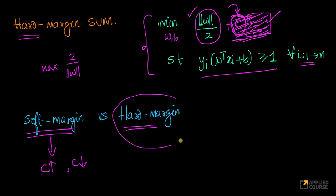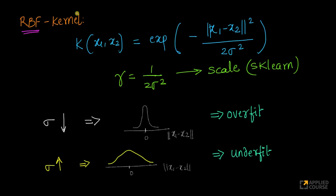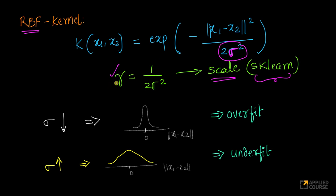We decide to use a hard margin SVM with an RBF kernel, since there are no hyperparameters in the primal formulation itself. The RBF kernel for two points x1 and x2 is: K(x1, x2) = exp(−‖x1 − x2‖² / 2σ²). This is the squared Euclidean distance divided by 2σ². Some use the notation gamma = 1/(2σ²), so the kernel becomes exp(−γ‖x1 − x2‖²). Scikit-learn uses gamma as the hyperparameter rather than sigma.